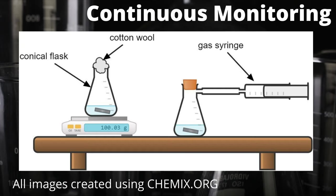We would use these apparatus if we want to find out the rate of a chemical reaction. Examples of reactions suitable for analysis using these setups include carbonate and acid, or metal and acid, as they both involve a gas being released. The apparatus on the left, which uses a conical flask stuffed with cotton wool on a top pan balance, allows us to monitor the loss in mass of a reaction over time as a gas escapes out of the top through the cotton wool. The apparatus on the right uses a gas syringe to monitor the volume of gas released and collected throughout the course of the chemical reaction.